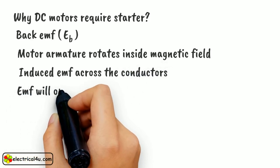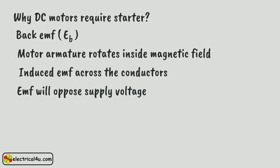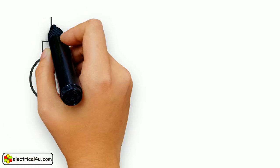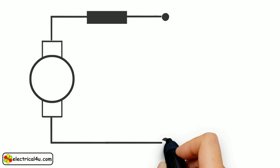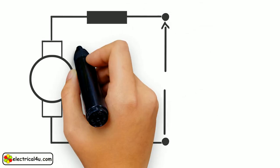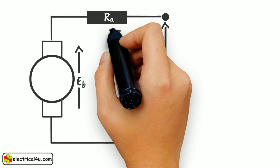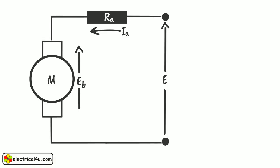Obviously, this induced EMF will oppose the supply voltage. Since this supply voltage is the ultimate cause of the rotation, this also essentially means that the back EMF at the starting is zero and develops gradually as the motor gathers speed.